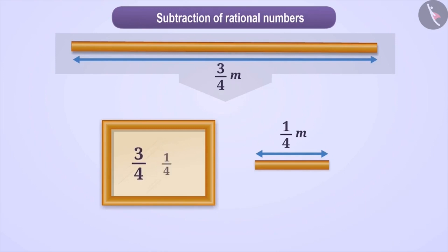You must subtract 1/4 meter from 3/4 meter. That is, here you have to subtract two rational numbers. So let's find out how to perform this calculation.